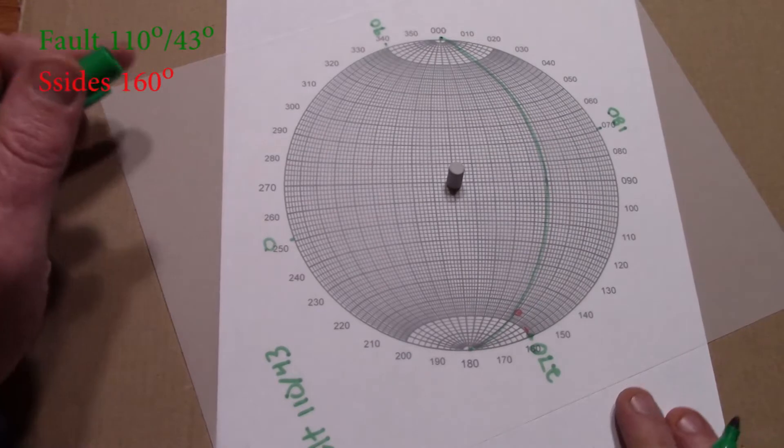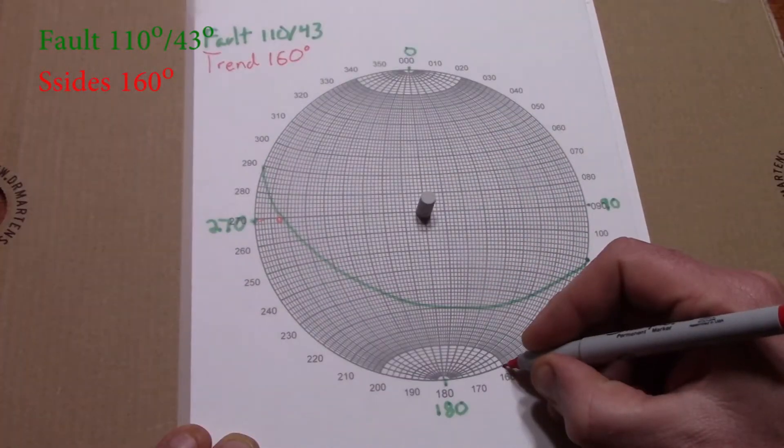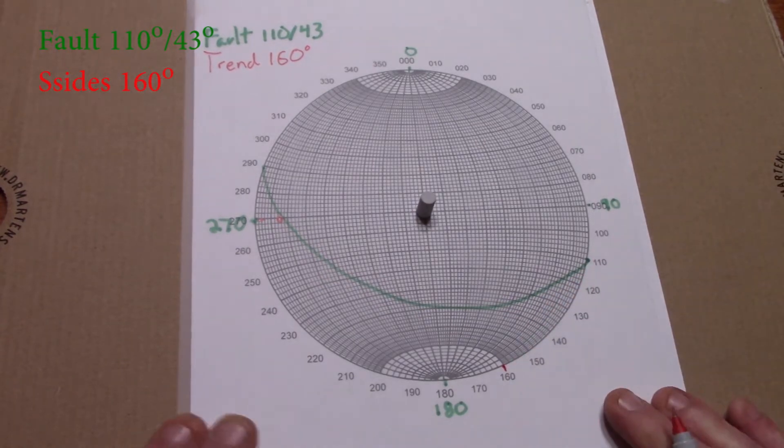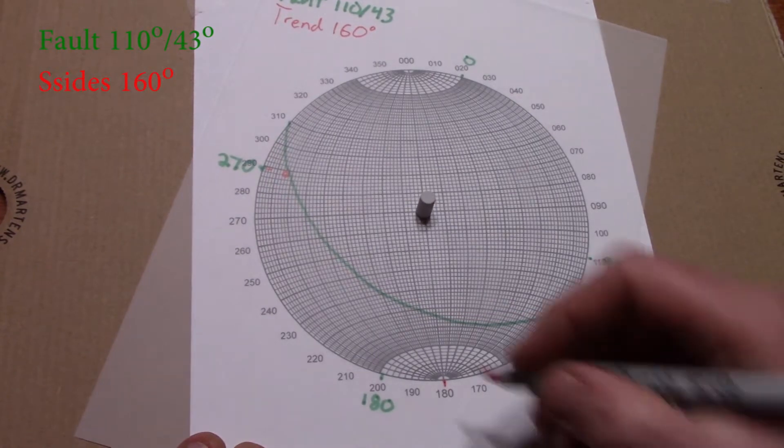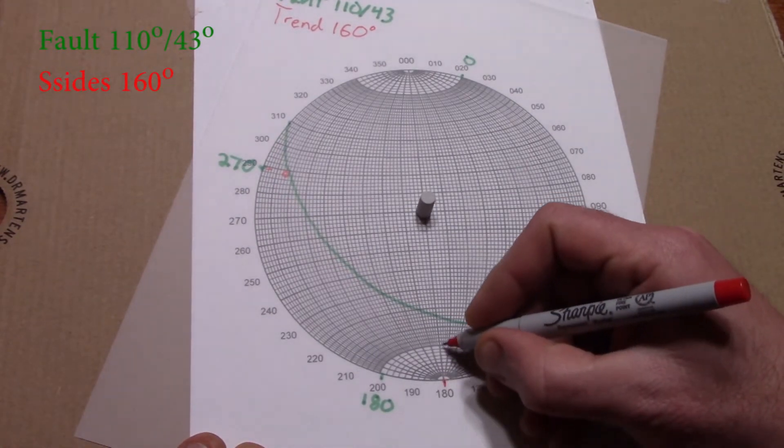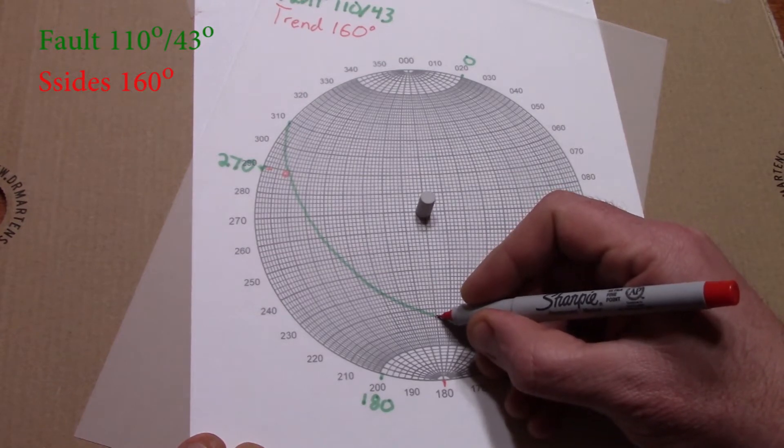Rotate back to proper orientation, and now mark the lineation trend of 160 degrees on the edge, and rotate this to any cardinal point where you can count in on a straight line. And where that line intersects the plane, we make a point, and that is the point represented by our linear slicken sides on this fault plane.